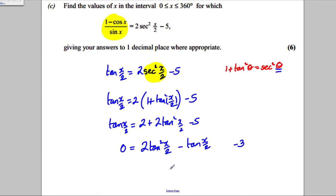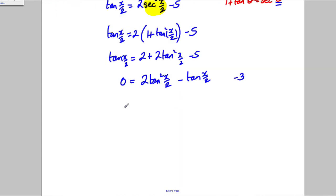Now, at this stage, with any luck, I should be able to factorise this. So 0 is equal to 2 tan X over 2. A single tan X over 2. And I'm going to have myself, let's see, a plus 1 and a negative 3 like that.